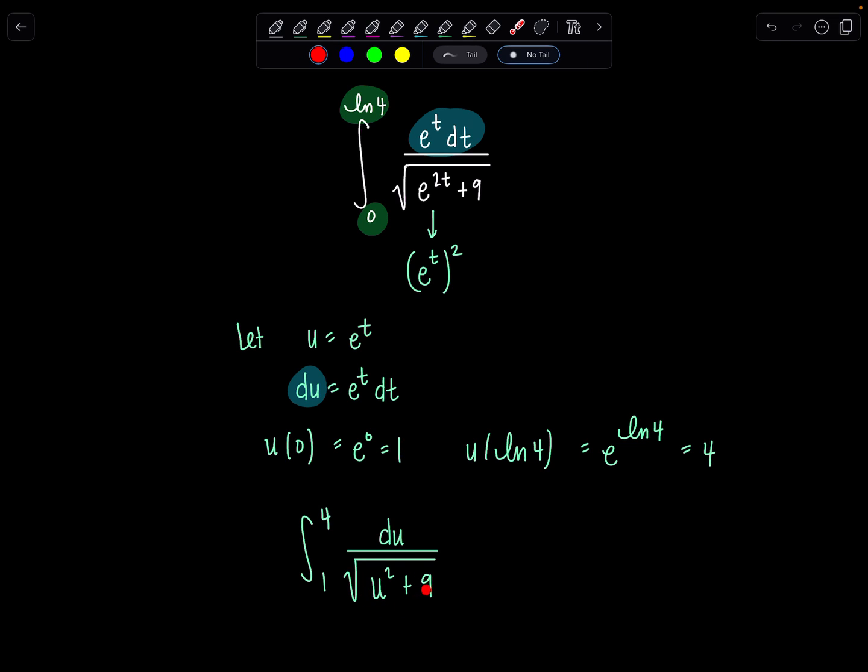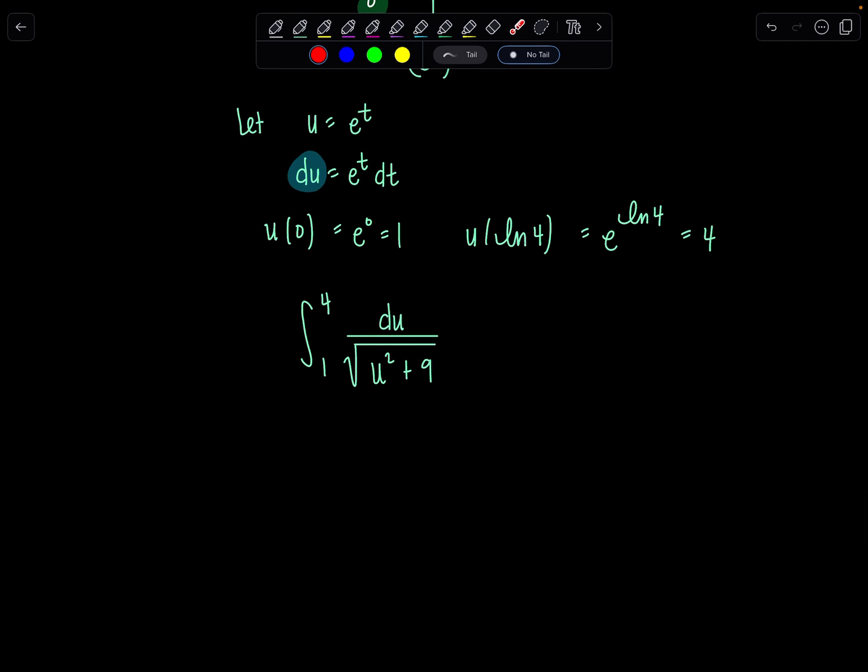Looking at the denominator, it's time for trig sub. I have a variable quantity squared plus a constant. So in this case, we're going to use tangent. I'm going to let u equal 3 tangent theta. Differentiate both sides again, du would be 3 secant squared theta d theta.